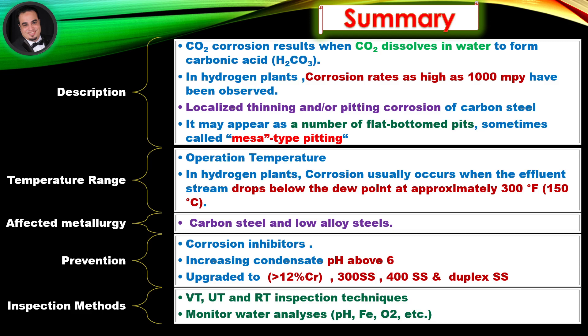Affected metallurgy: Carbon steel and low alloy steels. Prevention: Corrosion inhibitors, increasing condensate pH above 6, upgrading to more than 12% chromium, 300 and 400 series and duplex stainless steel. Inspection methods: VT, UT, and RT. Monitor water analyses: pH, Fe, O2, etc.